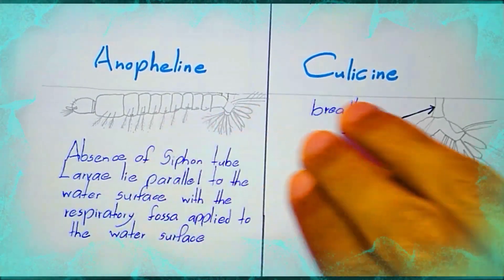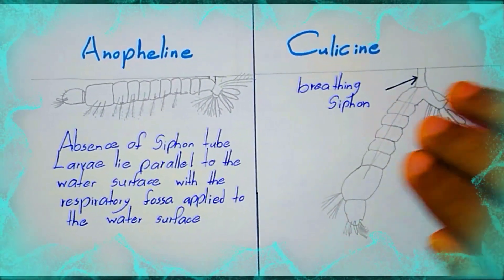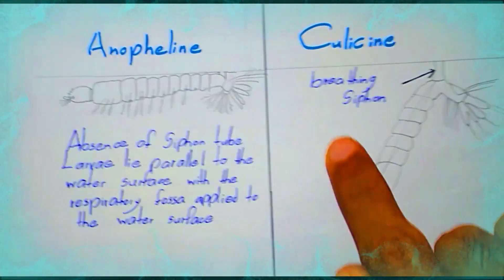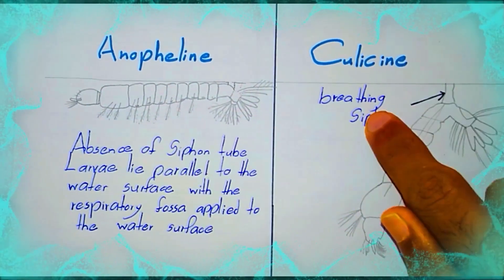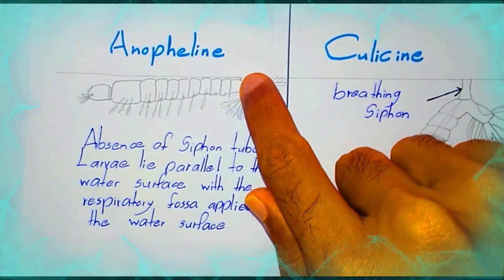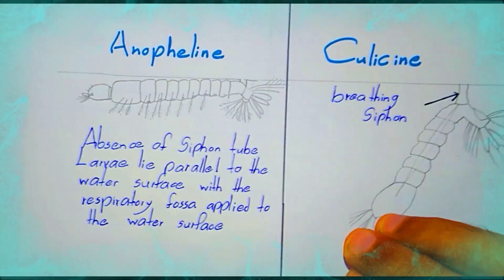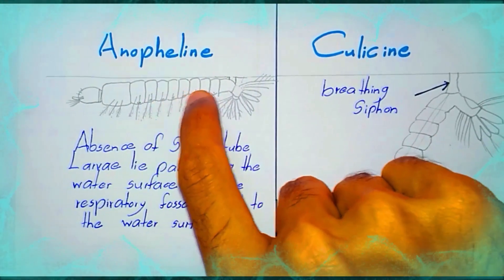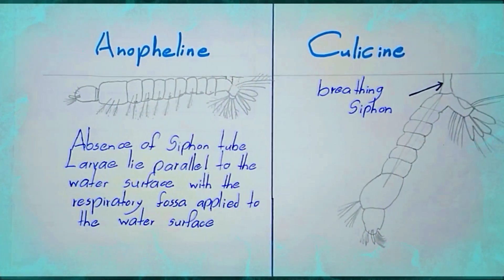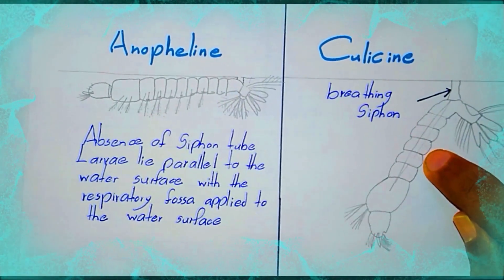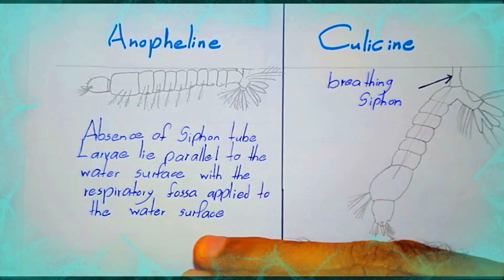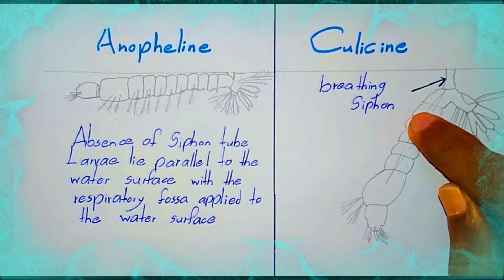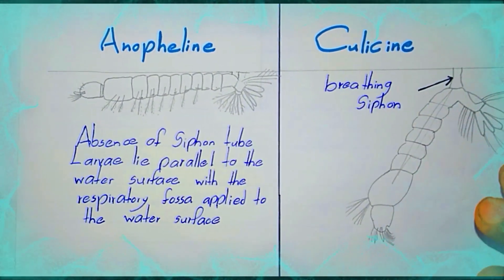This is larvae of anopheline and culicine mosquitoes. In anopheline mosquito larvae, the siphon tube is absent, whereas in culicine mosquitoes the breathing siphon is present. Anopheline larvae have palmatae — you can see the palmatae — while culicine larvae have no palmatae. Anopheline larvae lie parallel to the water surface, while culicine larvae hang down vertically from the water surface.